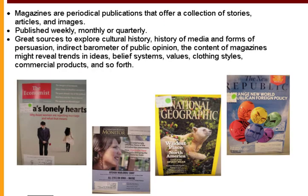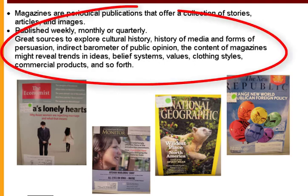In other tutorials I've explained what journal articles are. Magazine articles are periodically published and they offer a collection of essays, articles, and images. They could be published weekly, monthly, or quarterly. They're great sources to explore cultural history, the history of how media informs and tries to persuade. Sometimes they can be an indirect barometer of public opinion. The content of magazines might reveal trends and ideas, belief systems, values, clothing styles, as well as information about commercial products.